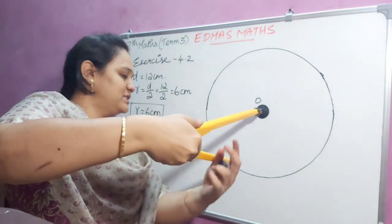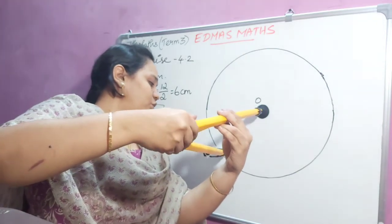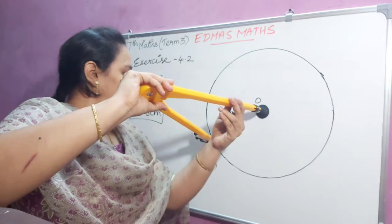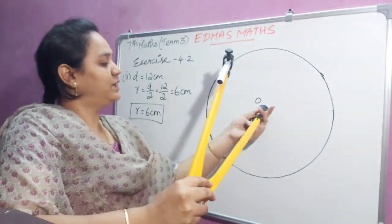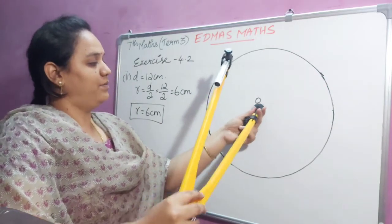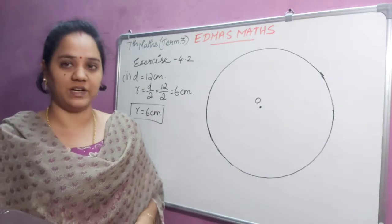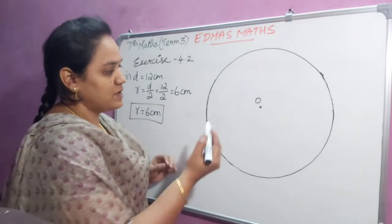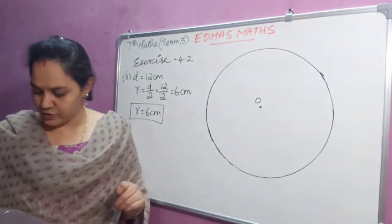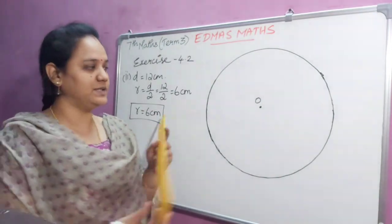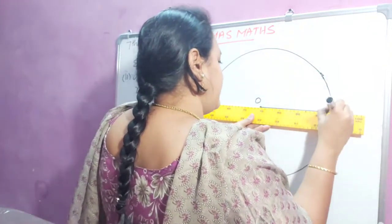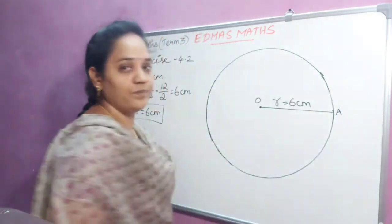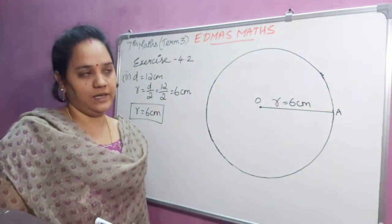This is a recalling session of how to draw a circle using compass. You have to rotate the needle which is fixed with a pencil. You should use only pencil for constructing a circle or any construction in practical geometry. This is your center and we have drawn a circle using compass. After constructing this, we draw a line and mention the radius — radius equal to 6 centimeter. We can mark the center point as O, so OA equal to 6 centimeter.